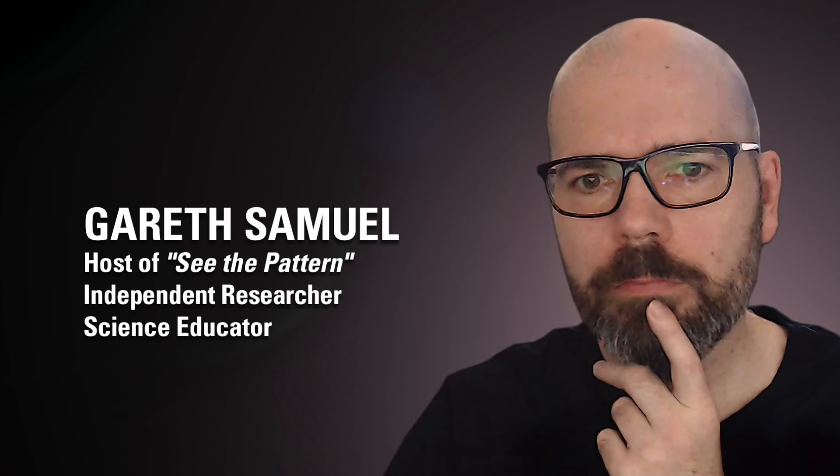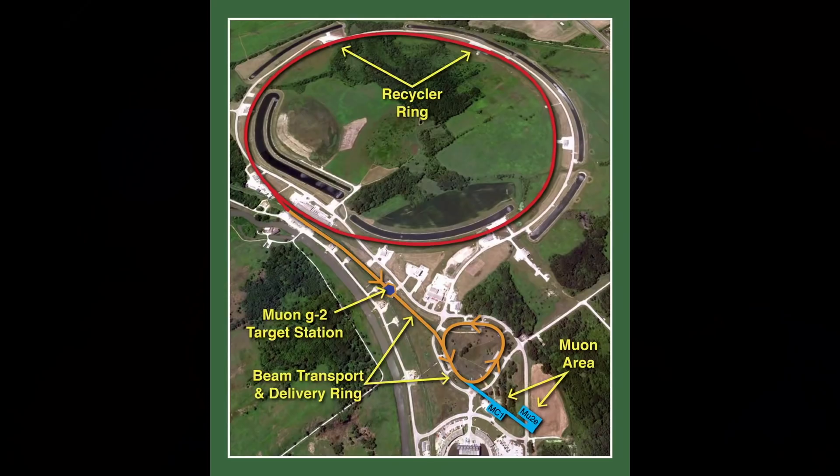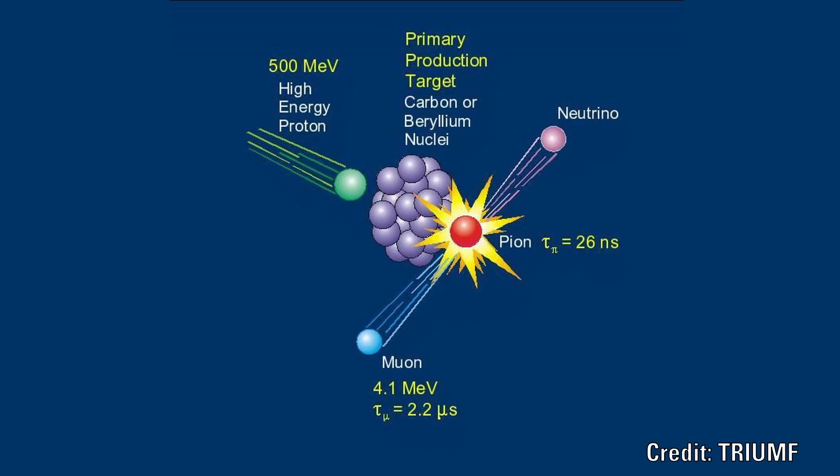At this stage it is important to take a little step back and just examine the experiment to understand what might be going on. Firstly they generate muons by firing protons at a target.